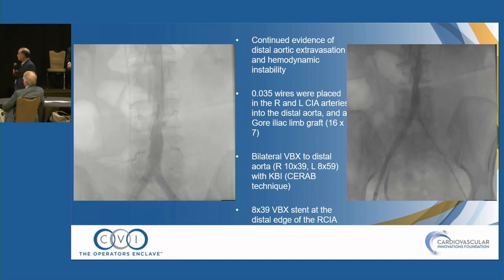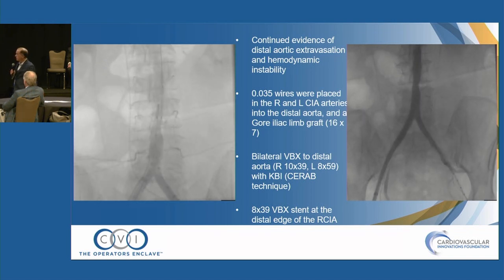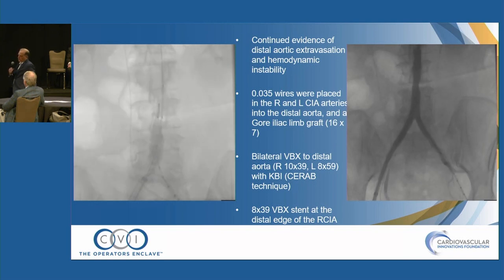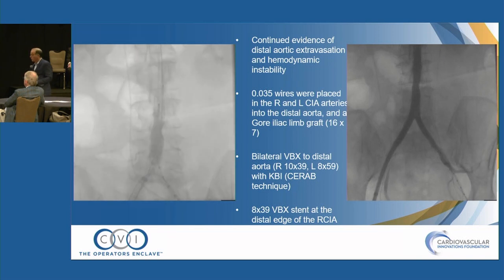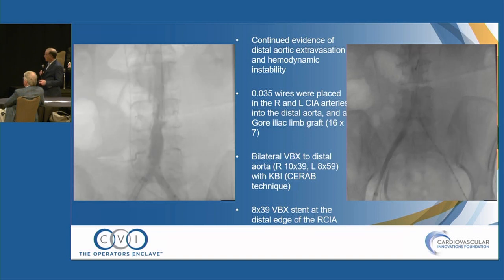He put in a Gore aortic graft, followed by VBX stents to both the distal aorta on the right and left — kissing balloon technique, the so-called C-RAB technique to reconstruct the aortic bifurcation. For good measure, he put a short VBX covered stent at the distal end of that right common iliac dissection to ensure it was sealed. Within about an hour, we went from the crisis image to a stable reconstruction. We left the lab with the patient having received one or two units of blood, off pressors, and hemodynamically stable. We weren't going to do the TAVR on this day. She had a CT next morning for baseline follow-up, went home a day and a half later, and came back for her TAVR four weeks later — doing very, very well.